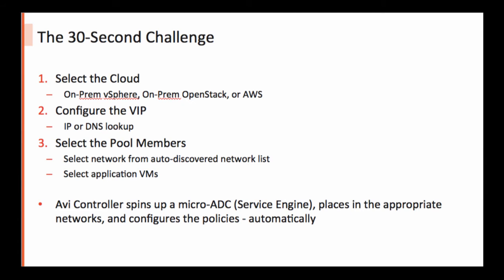After this, the AVI controller will talk to vCenter, OpenStack, Nova, or AWS as the case may be, spin up a new VM, or use existing micro ADC VMs if they have capacity, plumb it to the right network, and download the policies automatically.